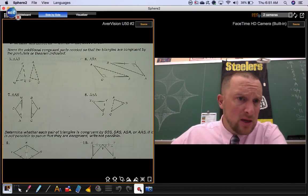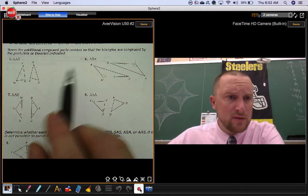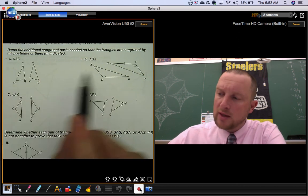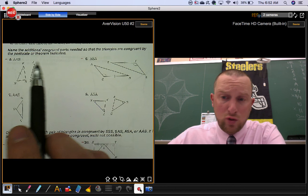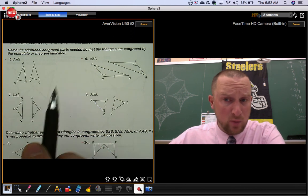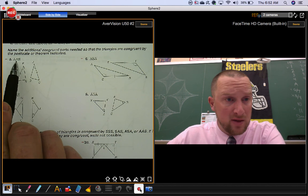Next section, name the additional congruent parts needed so that the triangles are congruent by the postulate or theorem indicated. Now this is a different type of exercise. They do not give you enough information to show that the triangles are congruent. But if you could pick one more pair of parts that were congruent, then they would be congruent. You want to make them congruent by this method.